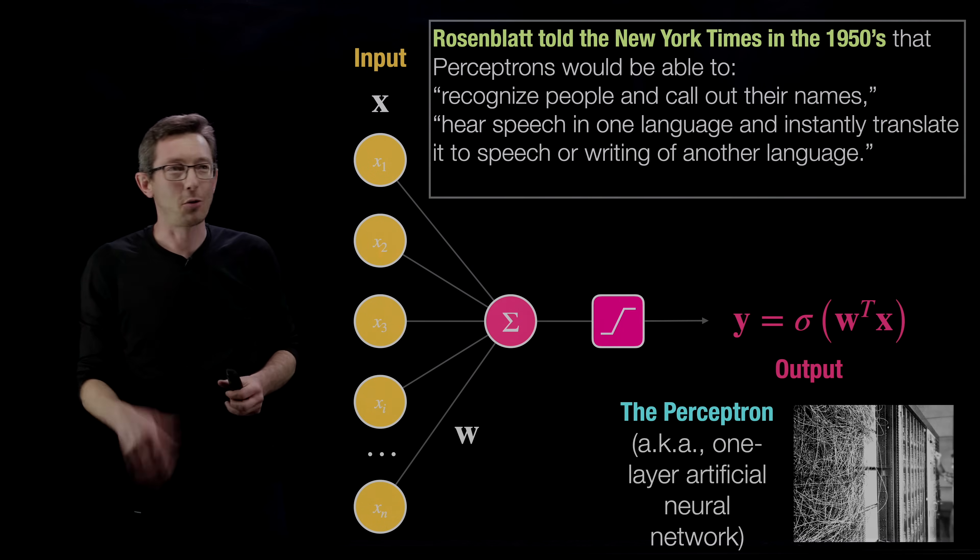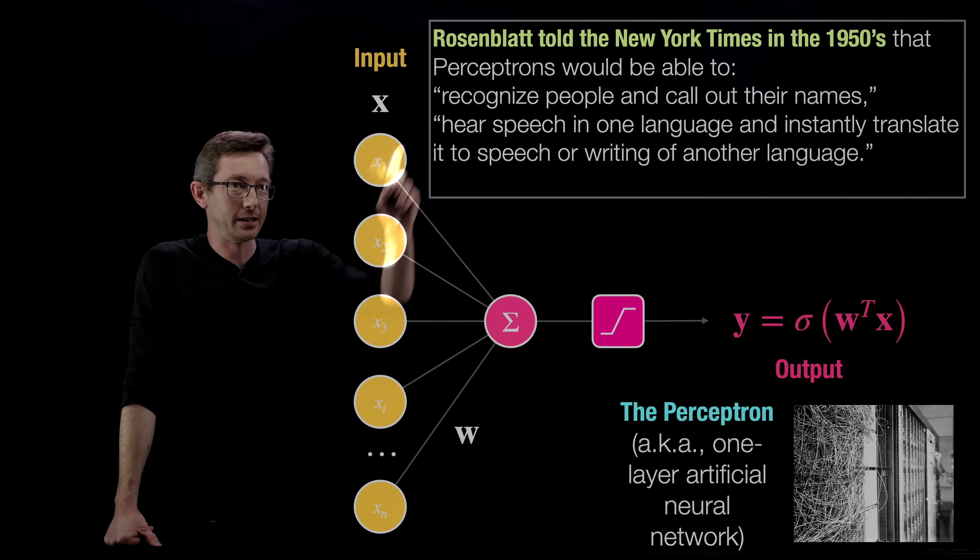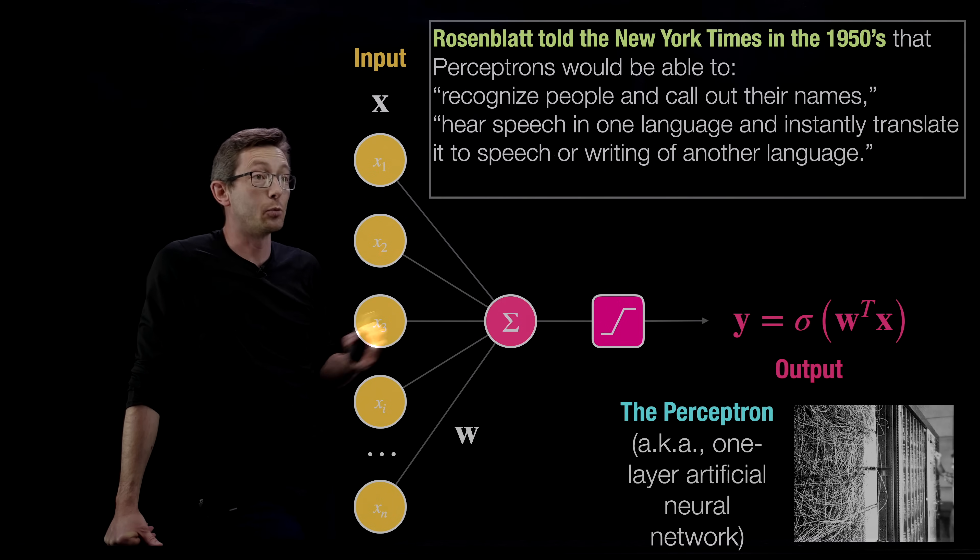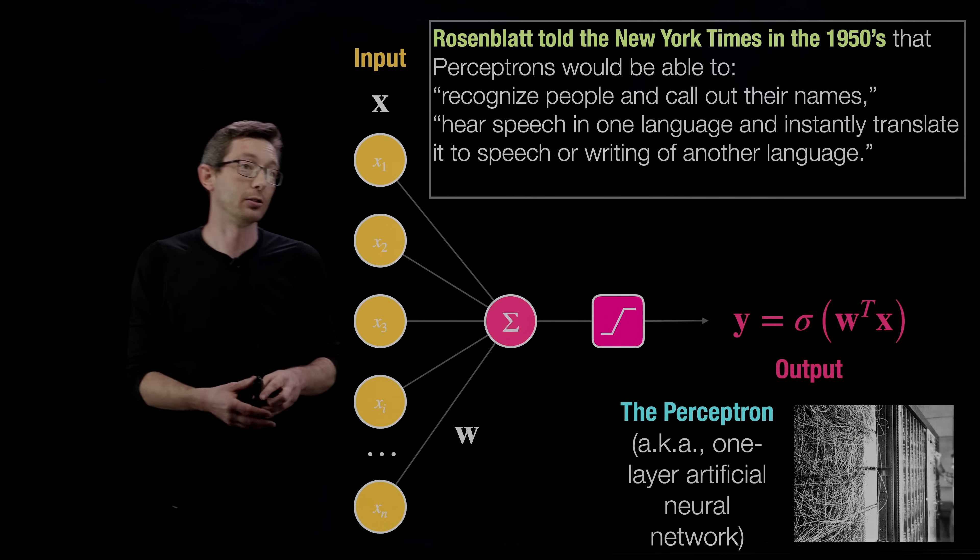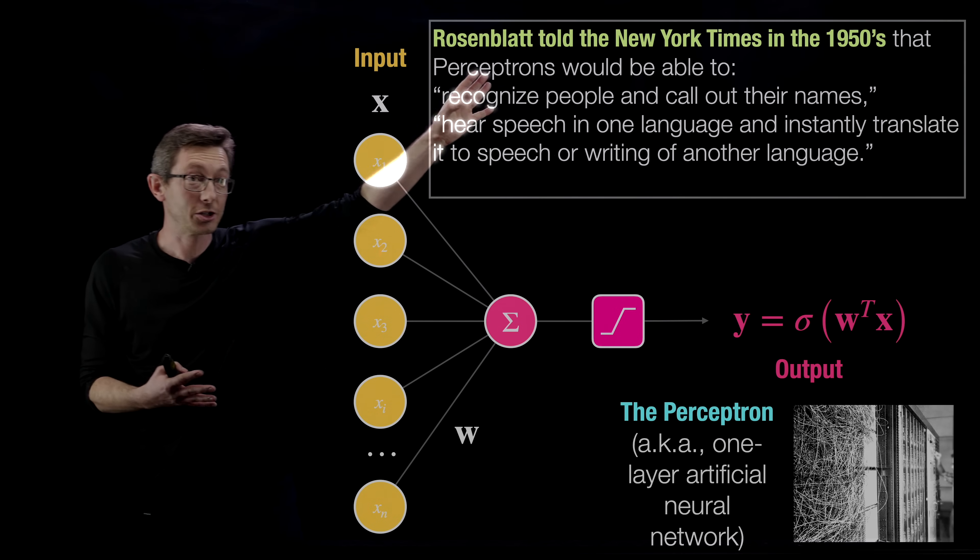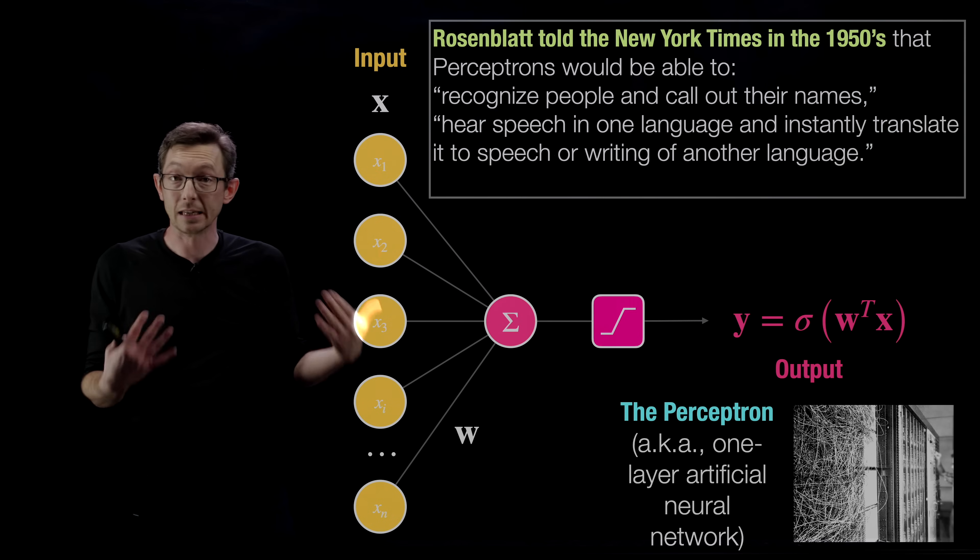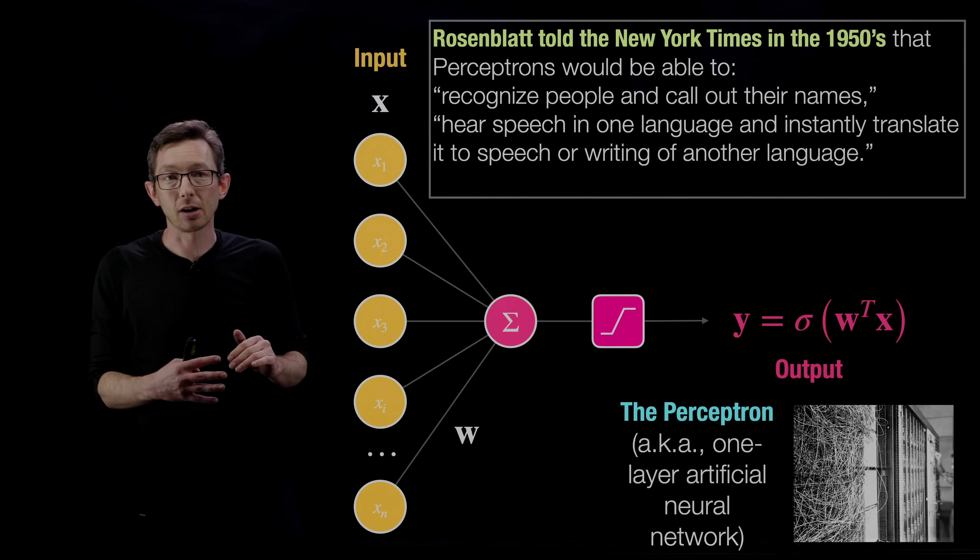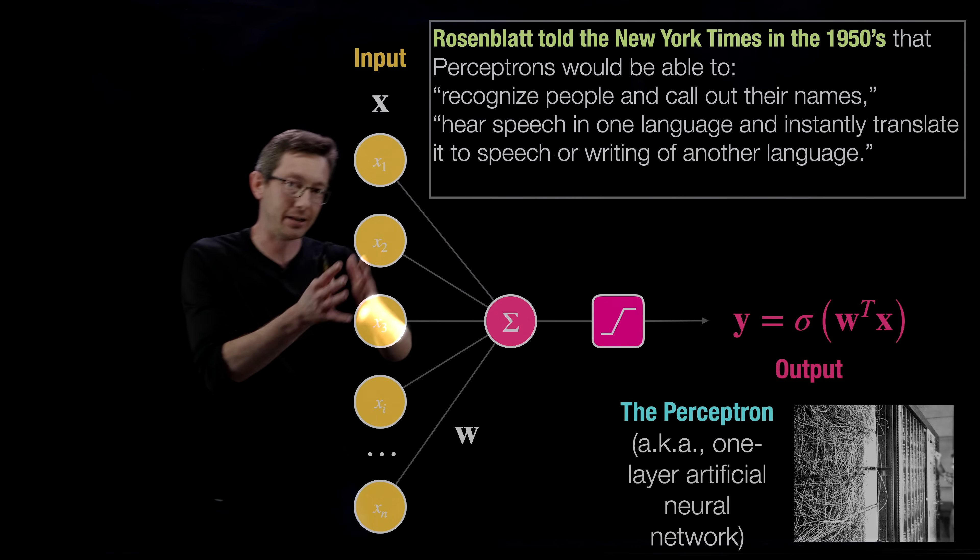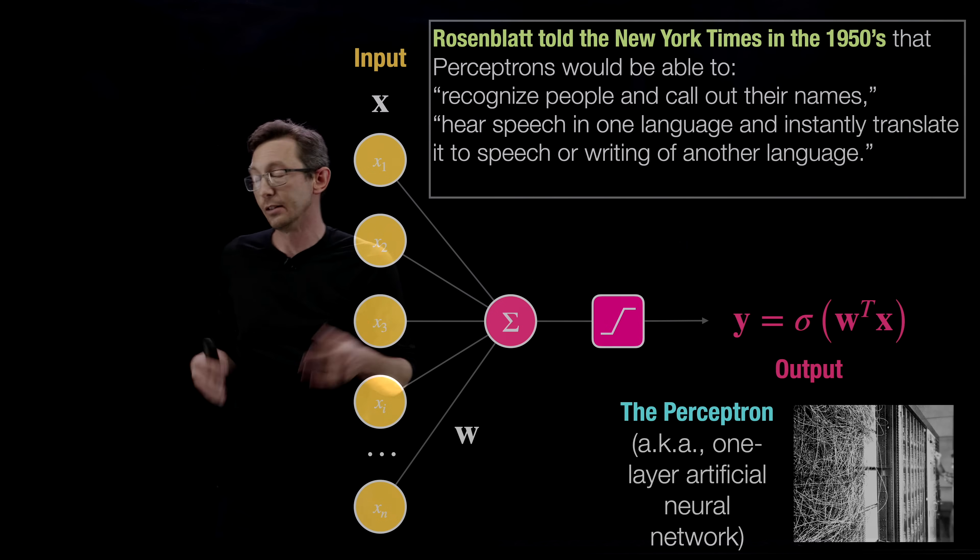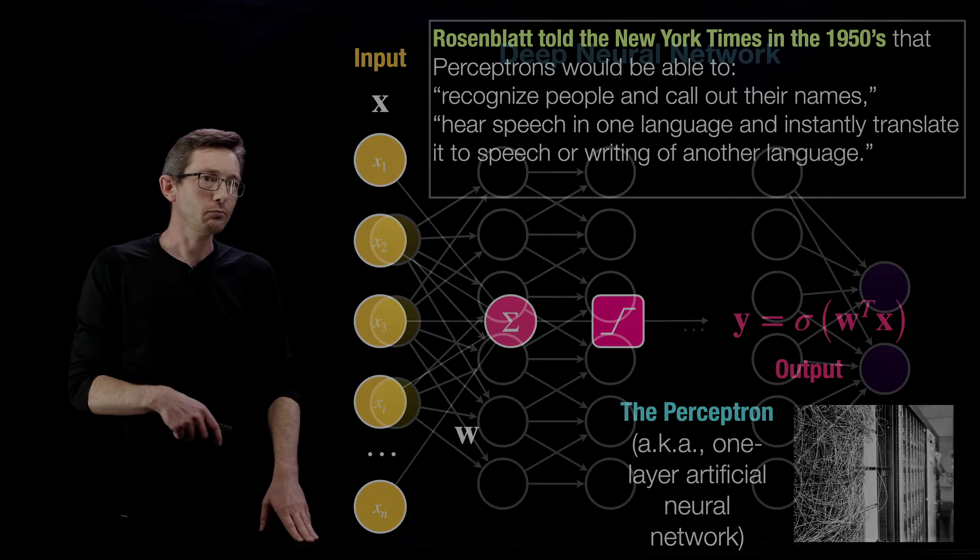It's kind of this cool quote that I learned from Bing Brunton, Rosenblatt, New York Times, 1950s, says, Perceptrons in the future will be able to recognize people and call out their names, hear speech in one language and instantly translate it to speech or writing of another language. It took a long time for that vision to come to fruition. But this is very much like the technology that we're seeing today with modern deep neural network architectures. So they're not these shallow kind of one layer perceptrons. Now we have many, many layers doing this kind of hierarchical set of abstract computations. But we are actually starting to achieve these types of goals, which is really cool.